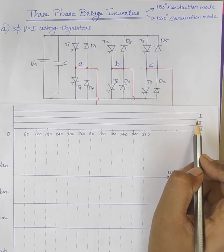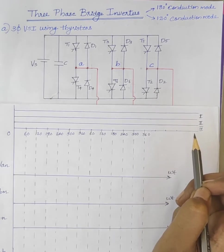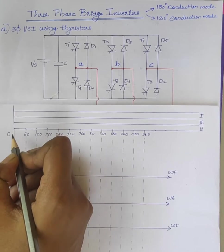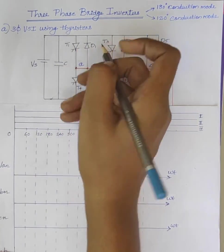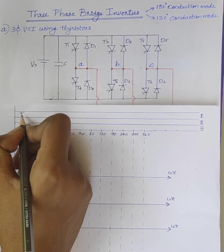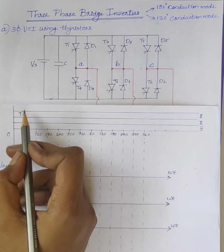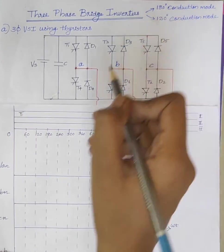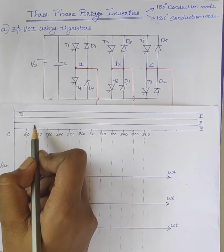These are segments 1, 2, and 3. At omega T equal to 0 degrees, we are giving firing pulses to thyristor T1. So at omega T equal to 0, firing pulses are given to T1. And in 120-degree conduction mode, T1 conducts for 120 degrees.